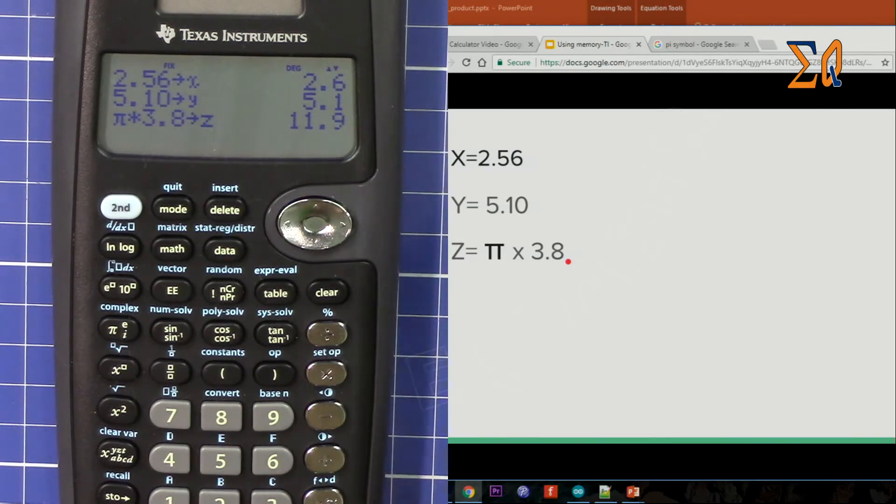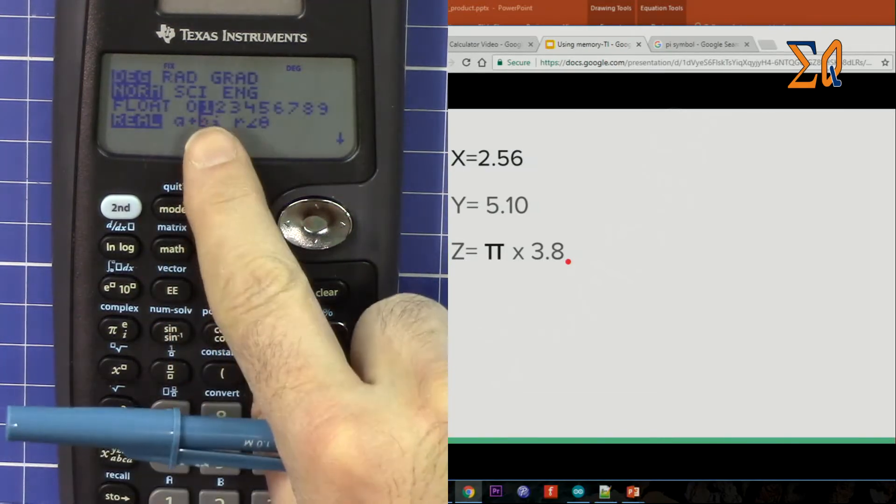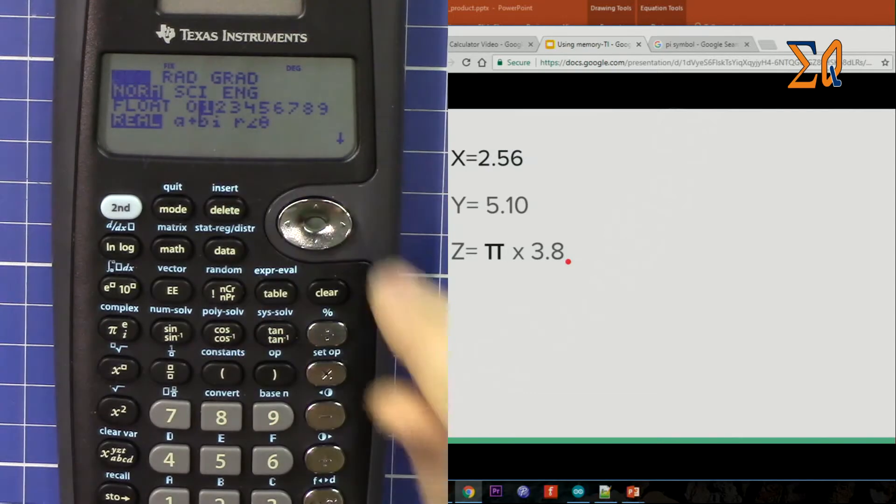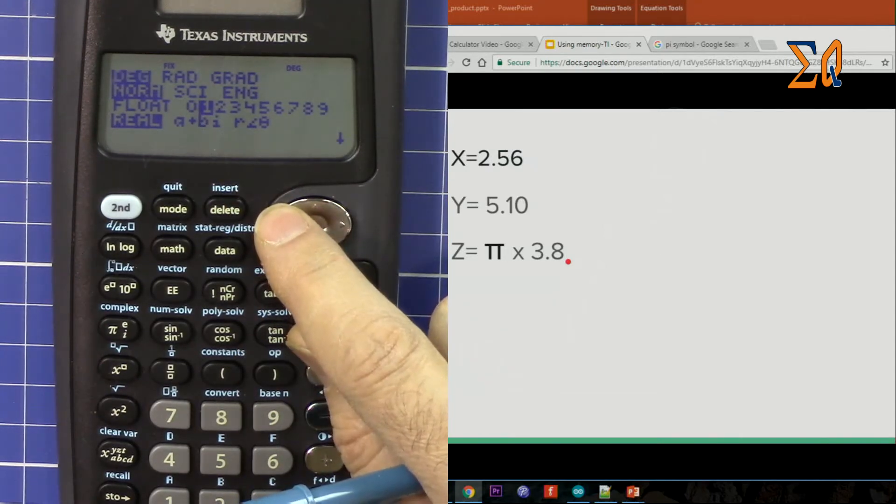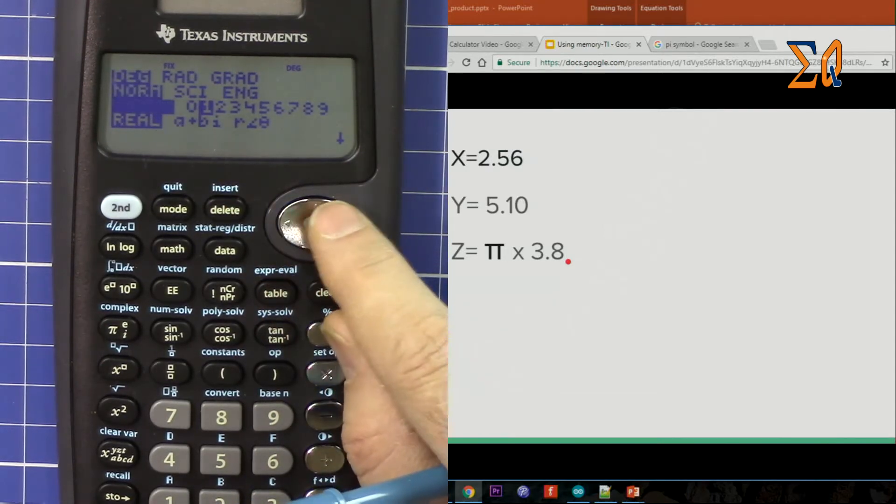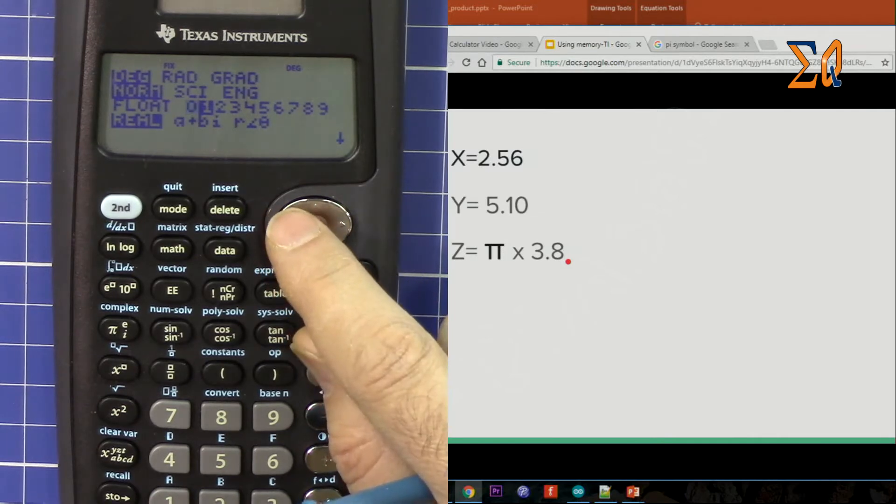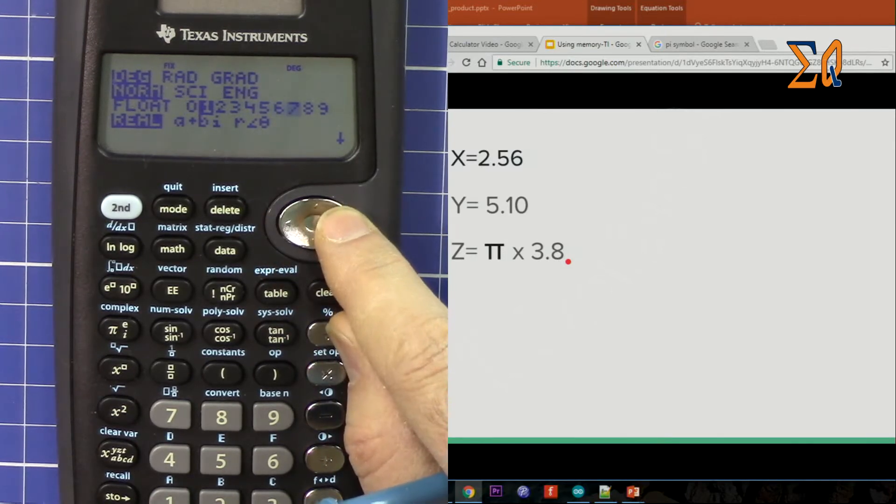By the way, the number of decimal points that we put here are set from here - mode. And here it's set at float, so we can either have zero, float, or we can have as many as you want.